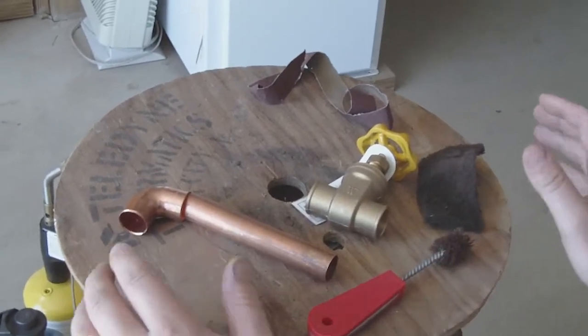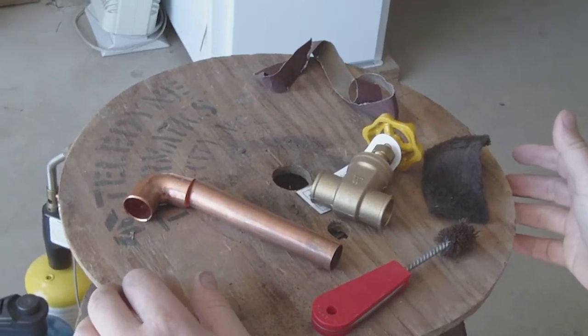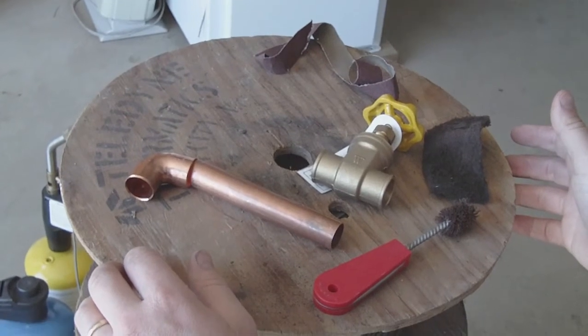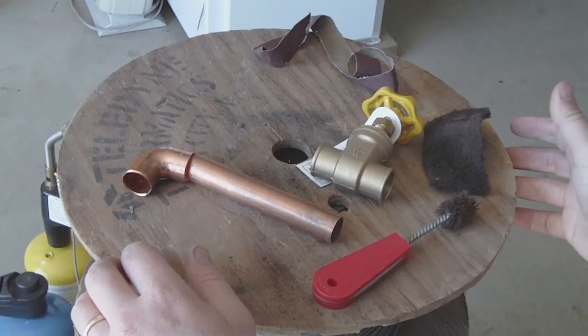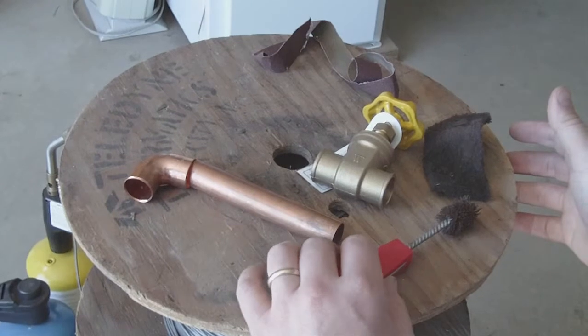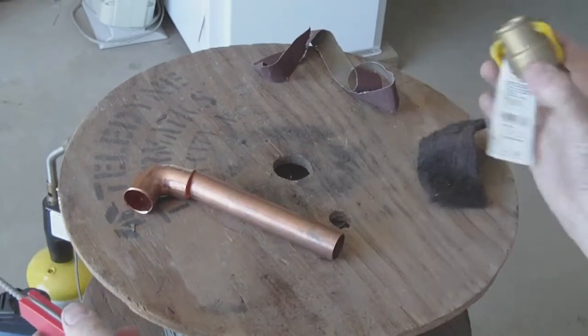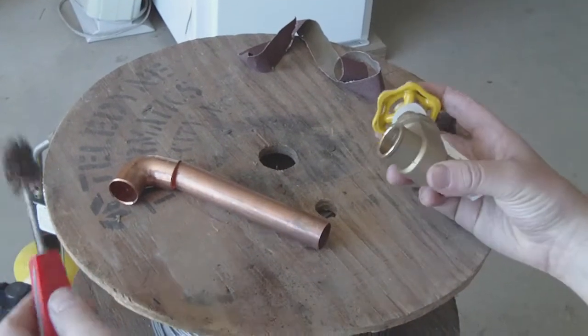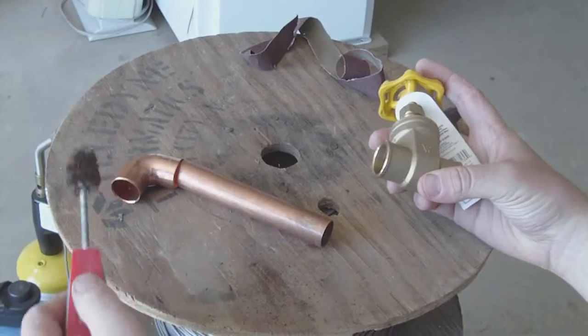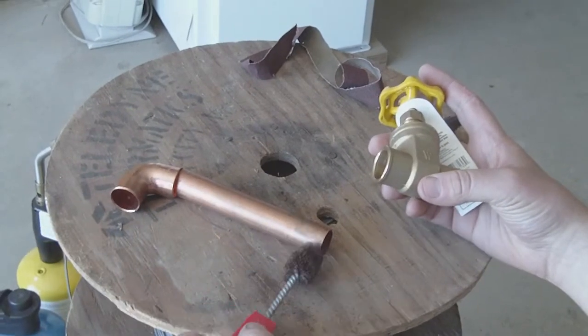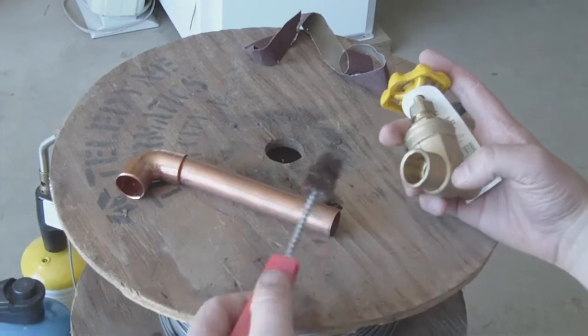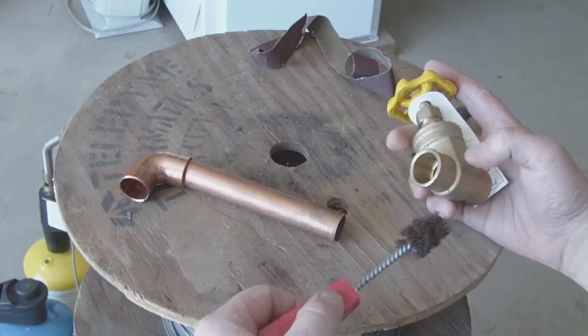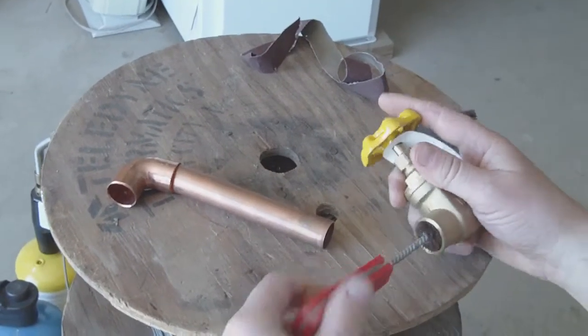We have now measured our pieces and it's time to clean the copper and the valve in order to prep it for the sweat solder. The absolute most critical component of making a successful solder joint is the cleanliness of the fittings before they get sweat soldered. If there's any corrosion on any piece, the flux and the solder will not adhere to it and will have problems.